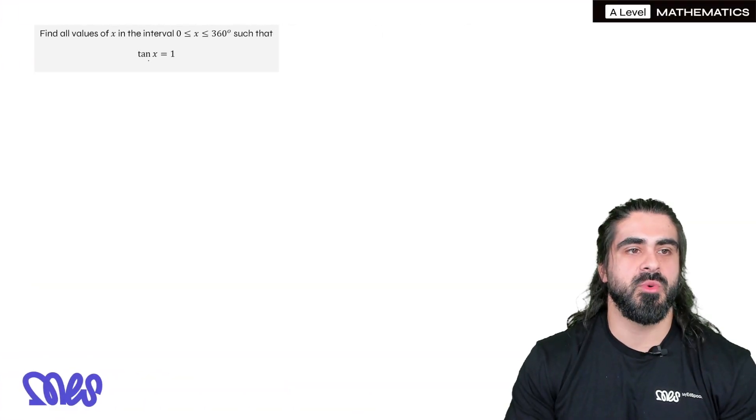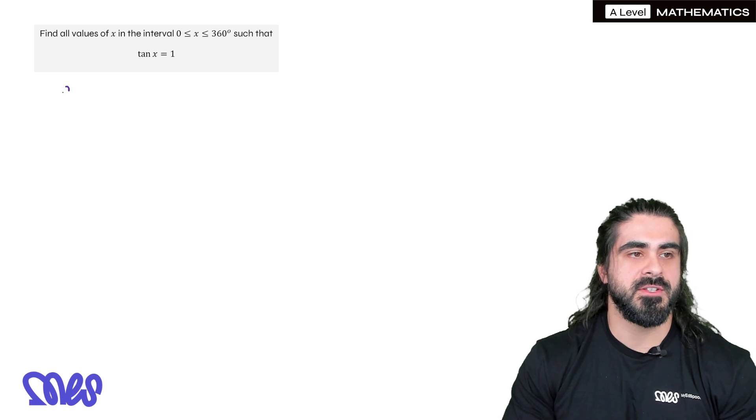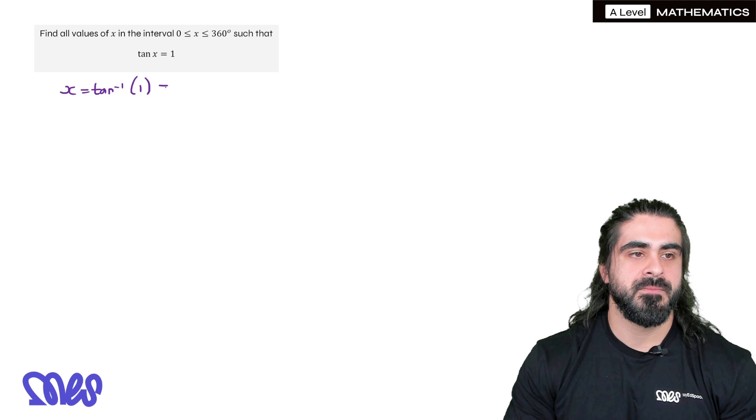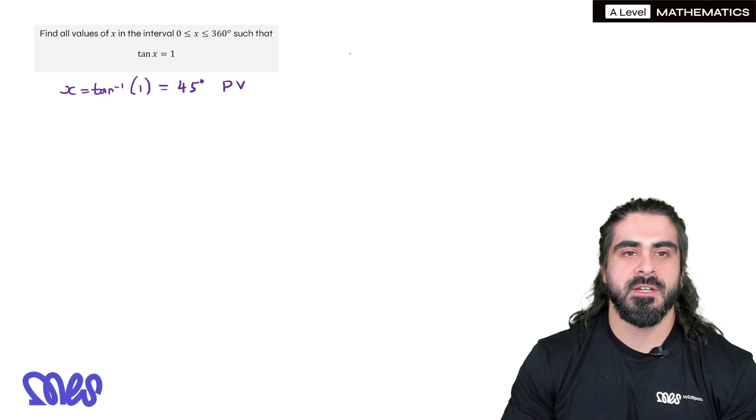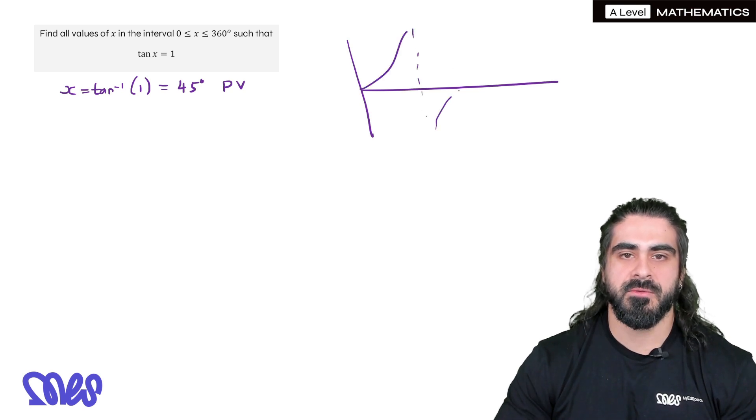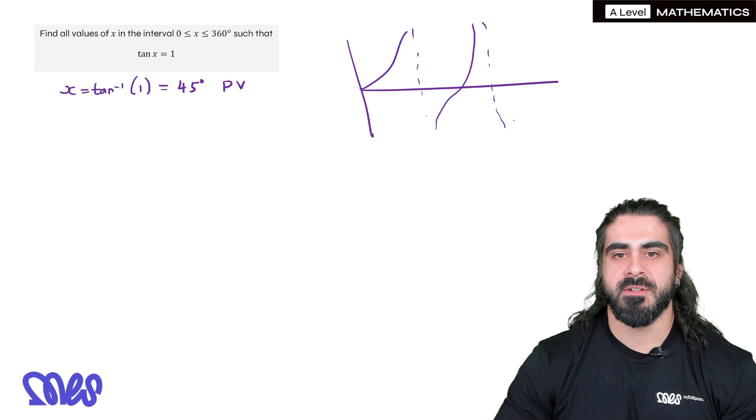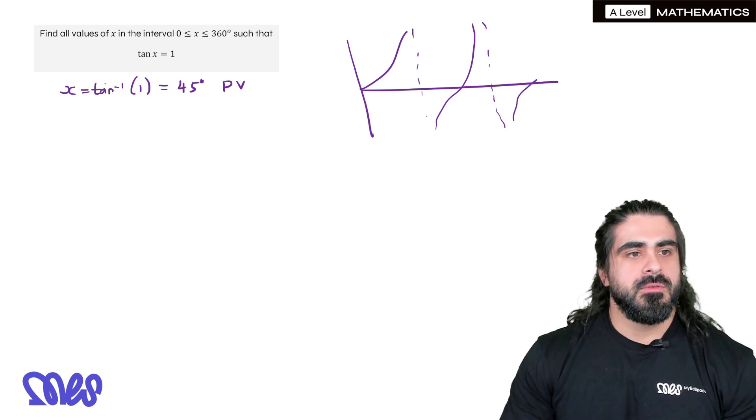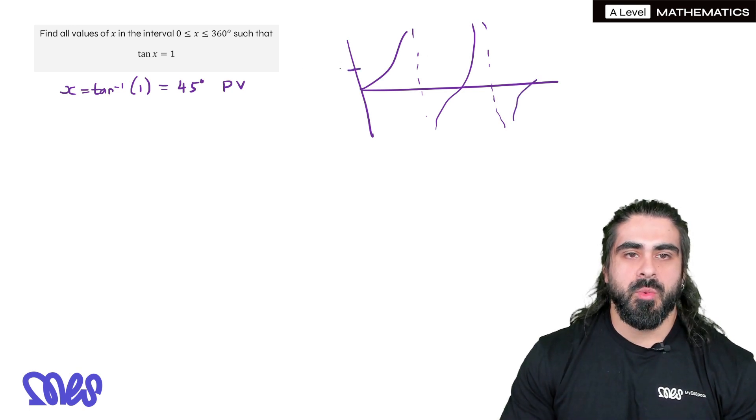How about tan? Tan x is 1. So the first thing we're going to do is we're going to do inverse tan of both sides. So x is inverse tan of 1, which in the calculator is 45 degrees and that's our primary value. Now how does it work with the tan graph? I showed you in the last episode what the tan graph looks like between 0 and 360.